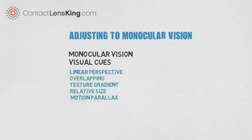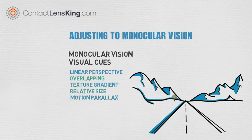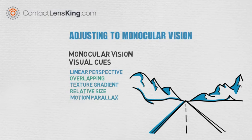Motion Parallax: This cue uses the notion of speed of objects to approximate distance, where closer objects move faster than distant ones.